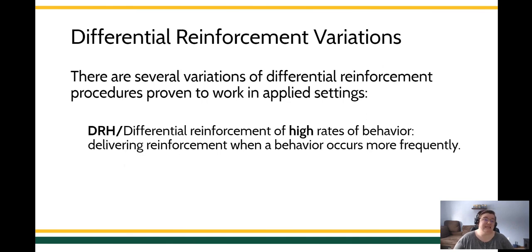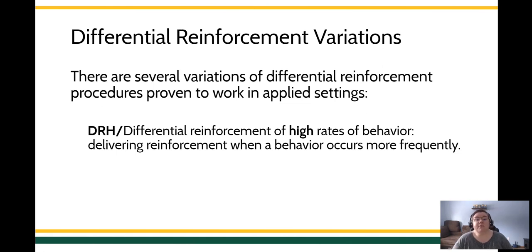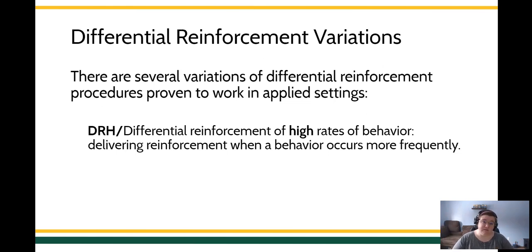We can also have something called the DRH, or differential reinforcement of high rates of behavior. This is when reinforcement becomes available if the behavior happens really rapidly or really fluently. You want to pick how much behavior you need per unit of time. Maybe a spouse feels most loved when they receive 10 text messages per day, and feels ignored if there are fewer than 10. The rate of behavior needed per day is 10 or more responses. This is DRH.